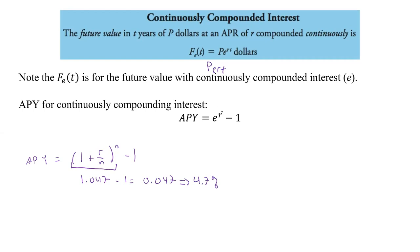For continuous compounding, e^r is the equivalent — that's how we're gaining interest. So e^r is the key part here, just as (1 + r/n)^n was the key part in the other equation. If we get something like 1.058, we subtract one to get 5.8% as our effective rate. We can take that back to 1.058 and use it.